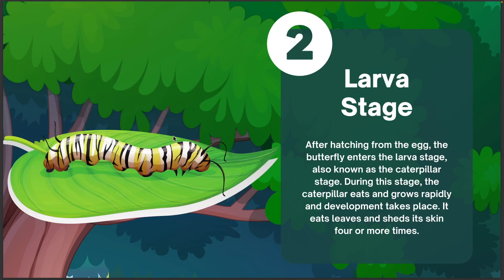Larva Stage. During this stage, the caterpillar eats and grows rapidly and development takes place. It eats leaves and sheds its skin 4 or more times.